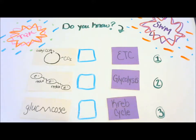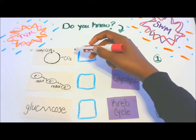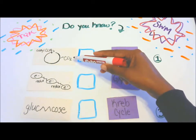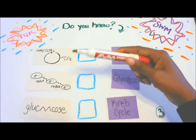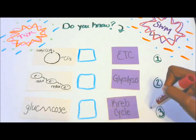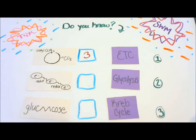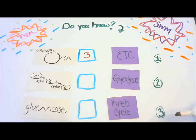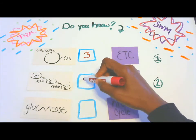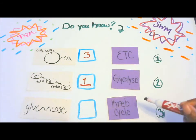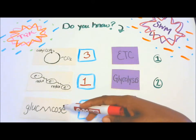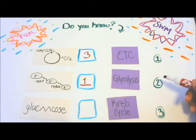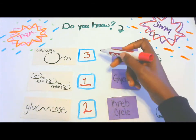Let's see how you did. Acetyl-CoA going into the cycle giving us carbon dioxide, ATP, NADH, and FADH2 — that's number three, the Krebs cycle. The cascade or series of redox reactions is the electron transport chain, number one. The oxidation of glucose giving us pyruvic acid, a couple ATPs, and NADHs is number two, glycolysis. So the answer is three, one, two.